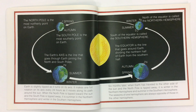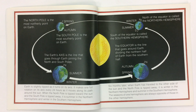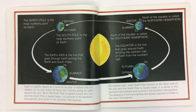Earth is slightly tipped as it turns on its axis. It makes one full rotation on its axis every 24 hours as it moves along its path around the Sun. When the North Pole is tipped toward the Sun and the South Pole is tipped away, it is summer in the Northern Hemisphere and winter in the Southern Hemisphere. Six months later, when Earth has traveled to the other side of the Sun and the North Pole is tipped away, it is winter in the Northern Hemisphere and summer in the Southern Hemisphere. The seasons of one hemisphere are always the opposite of those in the other hemisphere.